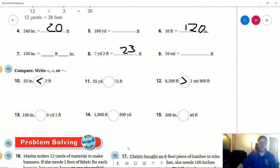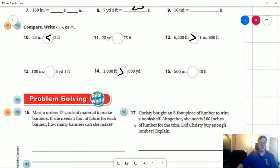Number 14, if I do 300 yards times three feet, that gives me 900 feet. So this side would be larger.